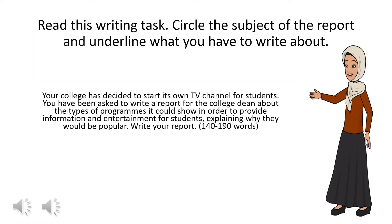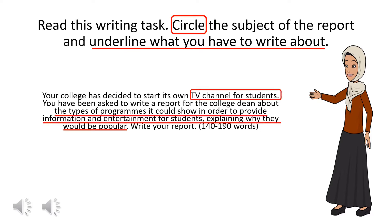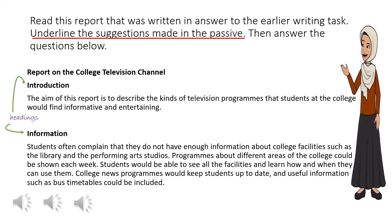Read this writing task. Circle the subject of the report and underline what you have to write about. Your college has decided to start its own TV channel for students. You have been asked to write a report for the college dean about the types of programs it could show in order to provide information and entertainment for students, explaining why they would be popular. Write your report, 140 to 190 words.